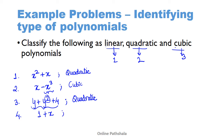Let us look at the fourth example: 1 + x. This is very simple — x is just raised to the power one, which means it has degree one. Therefore this is a linear polynomial.